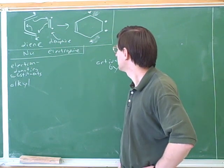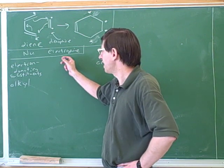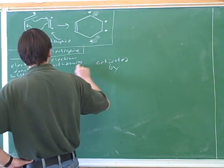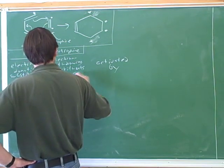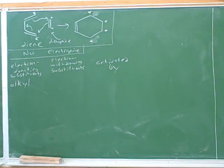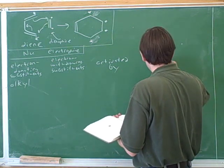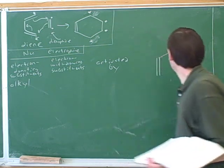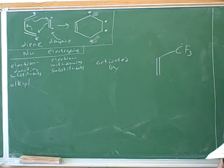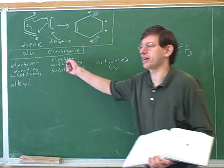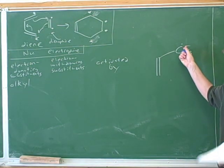What type of substituents do we need to activate the electrophile? Electron-withdrawing substituents. Oxygens in carbonyls sound reasonable. Would we consider this electron-donating or withdrawing? Withdrawing. Why? Because the fluorine is pulling the electrons towards it — the inductive effect. Because these are highly electronegative, this is pulling the electrons away. So would this activate or deactivate this dienophile? Activate, because we wanted electron-withdrawing substituents. This is a common substituent used for the Diels-Alder reaction.